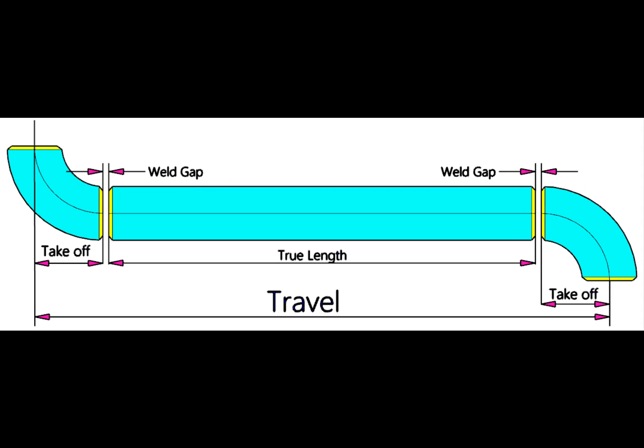So, how we will calculate the true length of the spool? The true length or the cut length is: add 2 welding gaps and 2 take offs, then minus this sum from the travel.